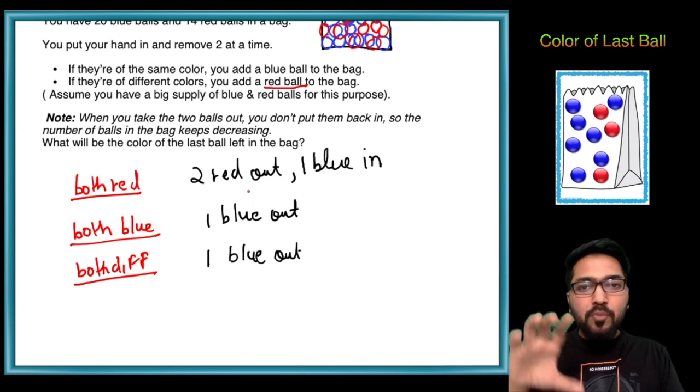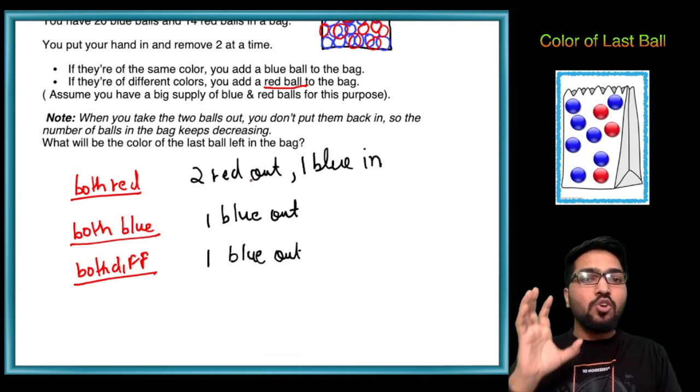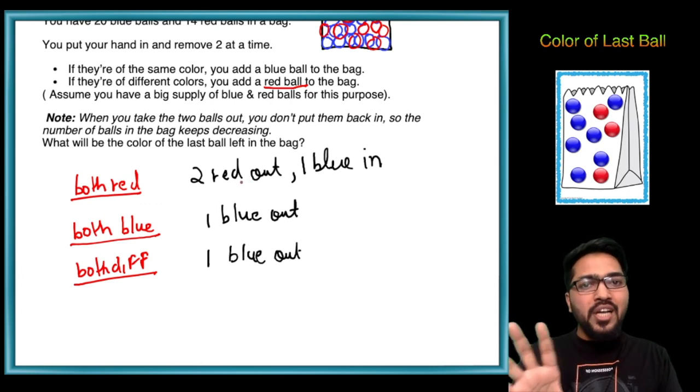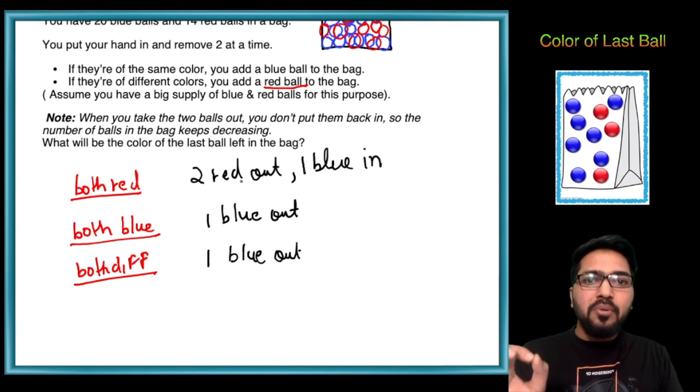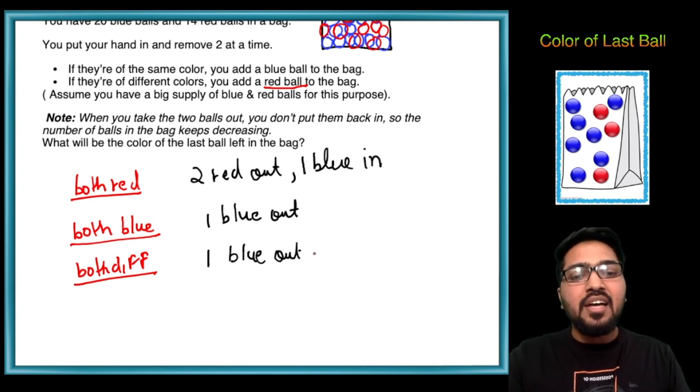So initially if we had 20 red balls, if we're always removing them in pairs, then at all times the number of red balls is always going to be even. Meaning 20 balls initially, removing two at a time, so at all times the number of red balls in the bag is always going to be even.